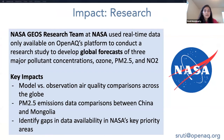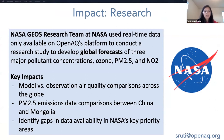Here are some impact examples from different sectors. In terms of research, the NASA GEOS research team used the real-time data available on the platform to conduct a research study and develop air quality forecasting models. They were actually able to use the real-time data to double check their models and make sure they're working correctly. In addition, they were able to make data comparisons between different countries and also identify data gaps in key areas.